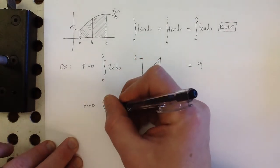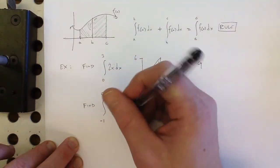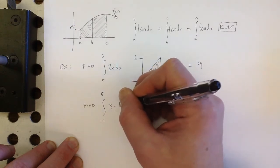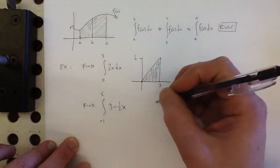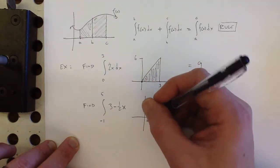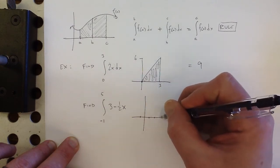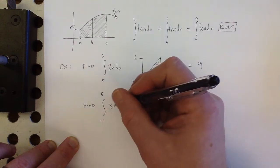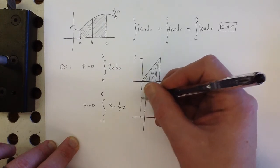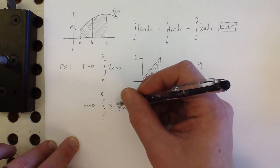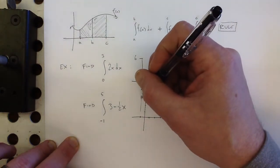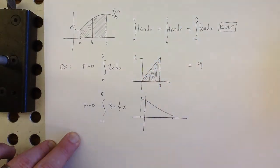What about this? How about the area from negative 1 to 5 of 3 minus 1 half x? So again, I'm going to sketch a graph of this. I'm just going to plot those two points. That's the easiest way - get the first and the last to figure out what we're looking at here. So when I plug negative 1 into this, it's at 3 and 1 half. And when I plug 5 into this, it's 3 minus 5 halves, so that's positive 1 half.